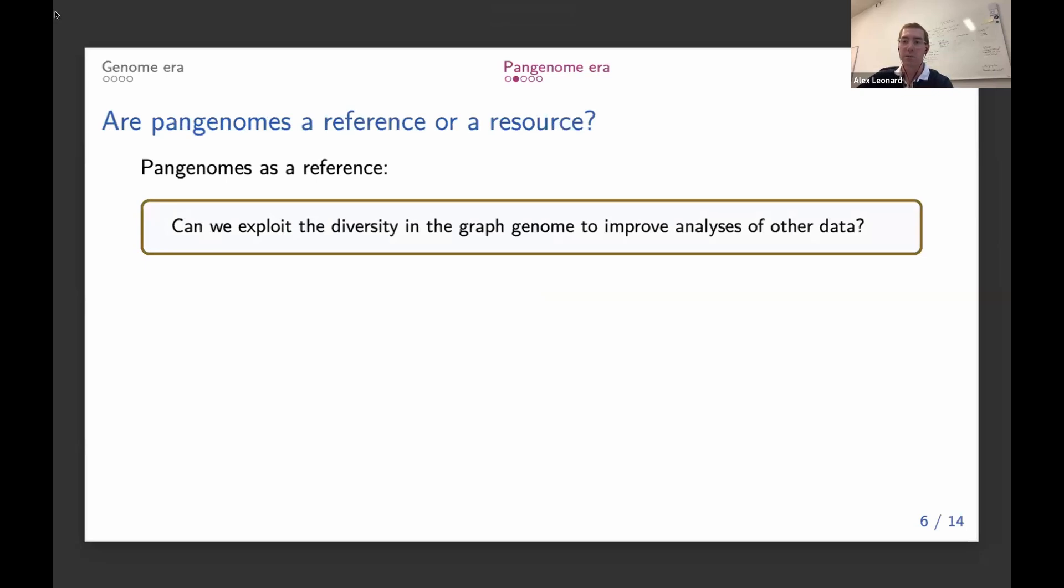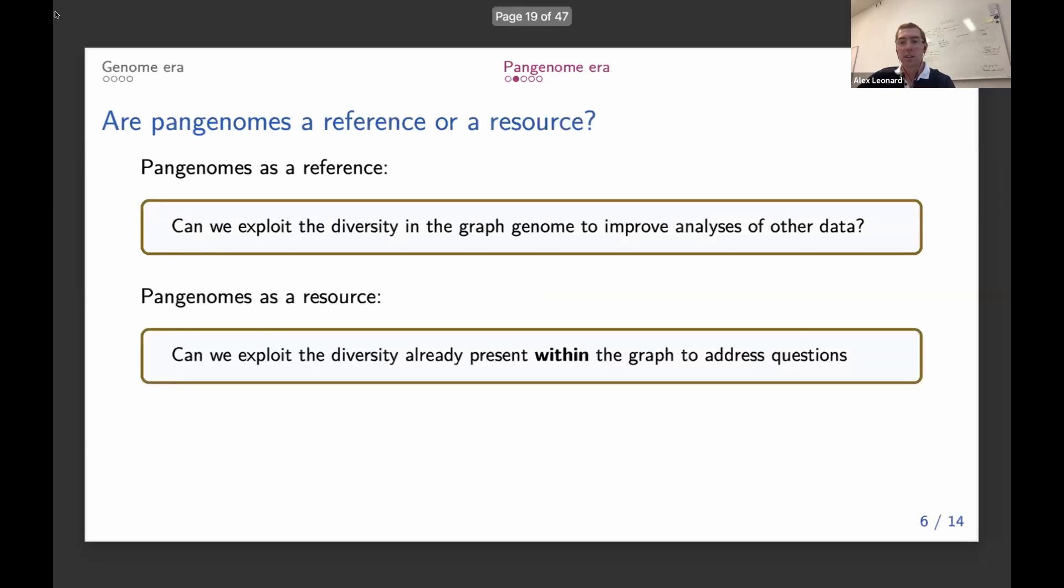To find the correct place for previously unrepresented reads. The other type is to treat the pangenome itself as the final downstream product. If we have many different genomes in our pangenome, there will be a lot of interesting diversity across different breeds or different species.